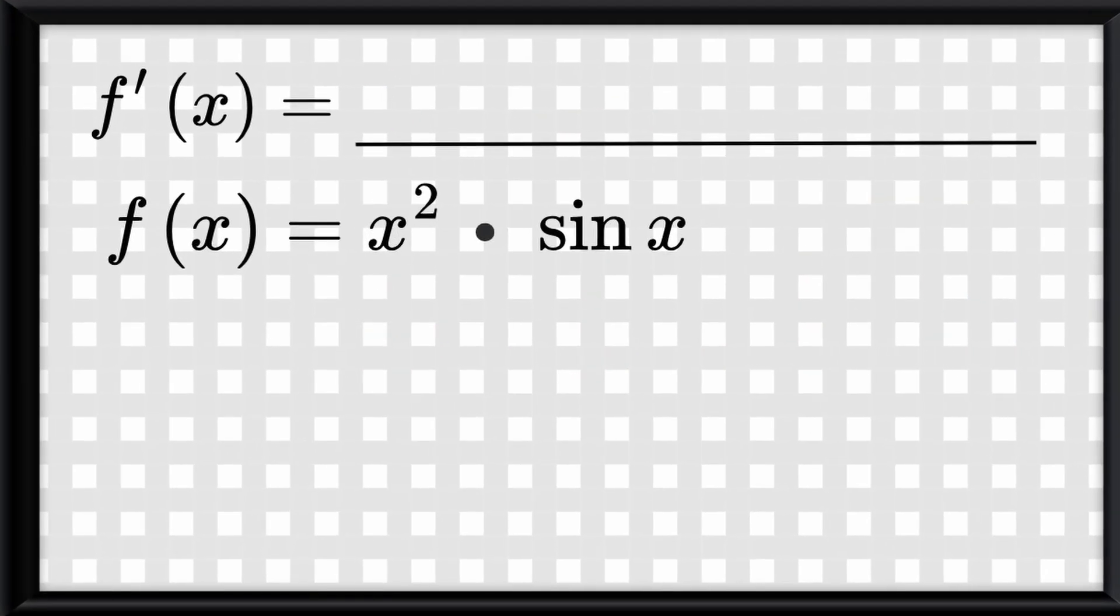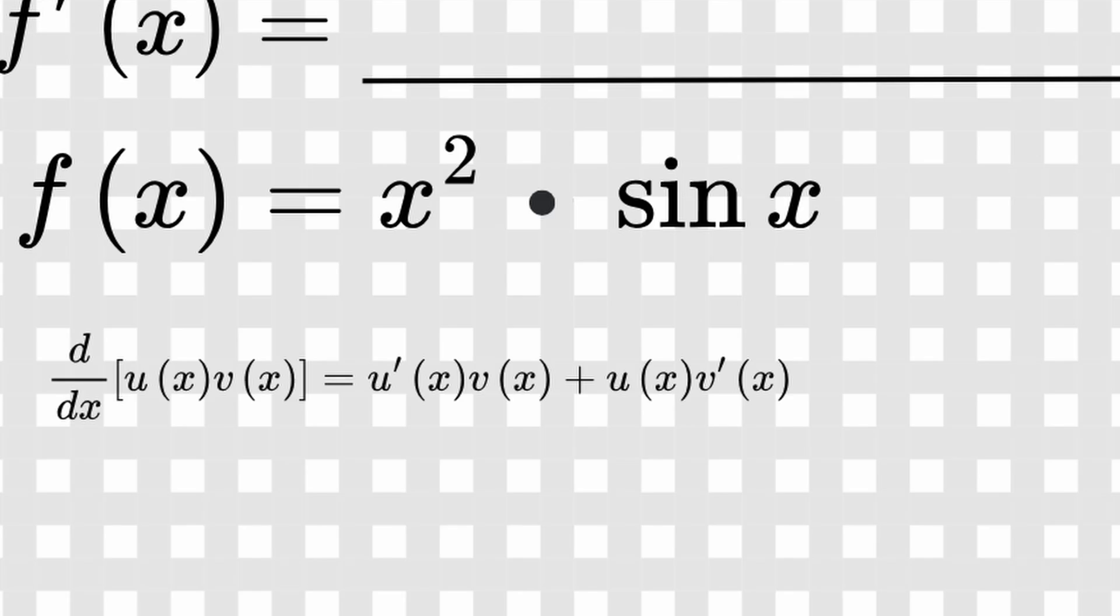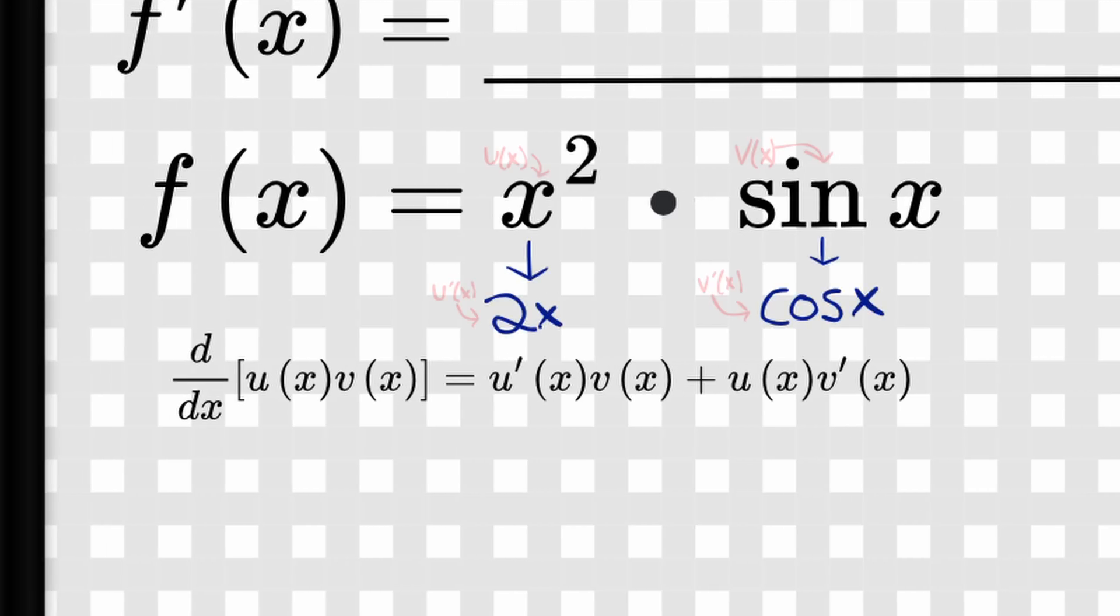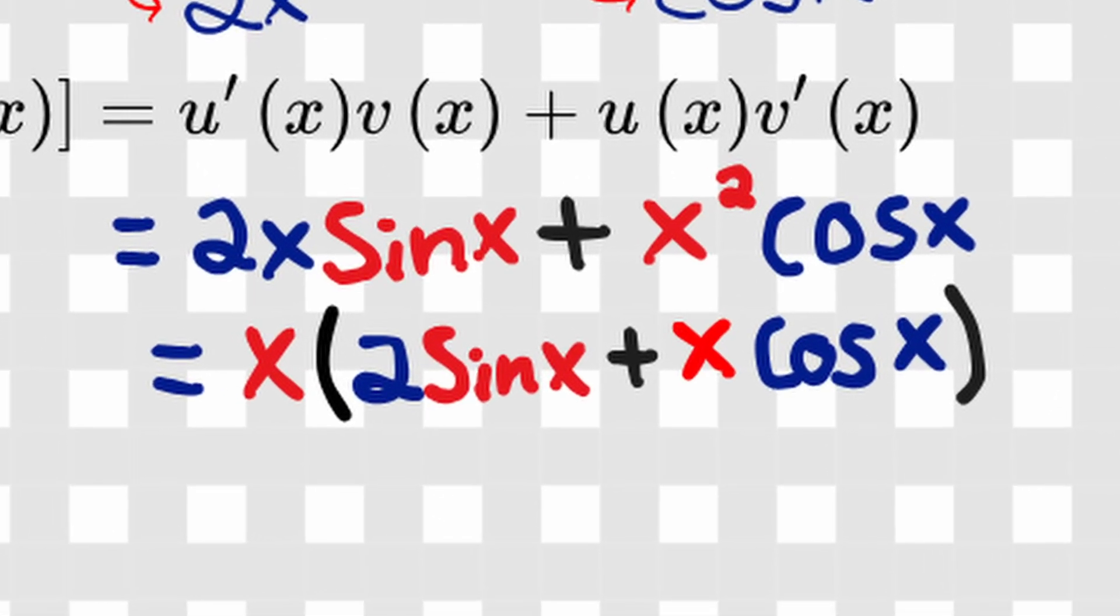But what about this example? This looks like a prime example of the product rule. So for this rule, I need to find the derivative of each term, then I label them, then I plug it into the rule, and simplifying, this would be our derivative function.